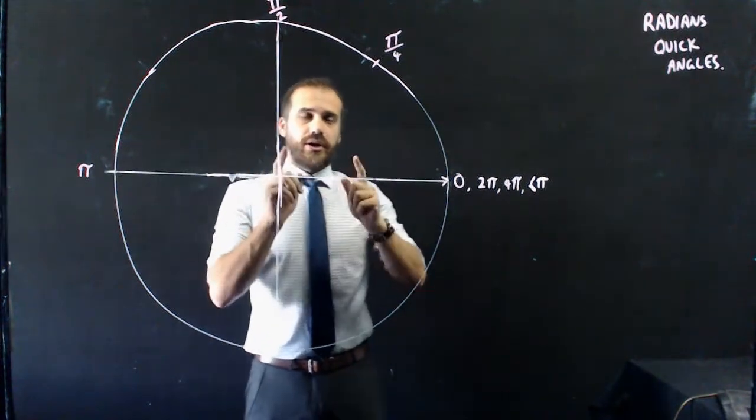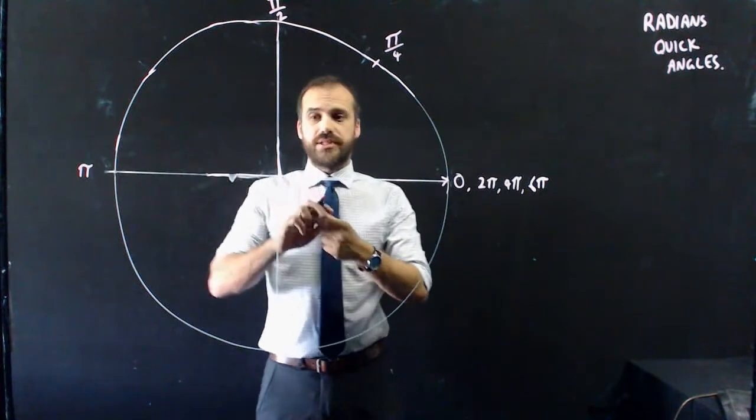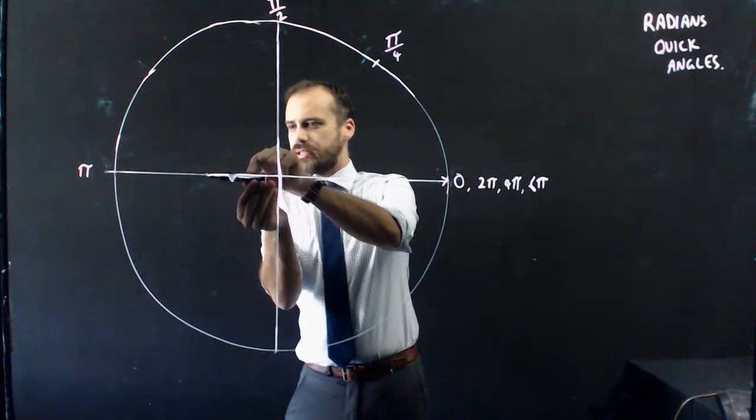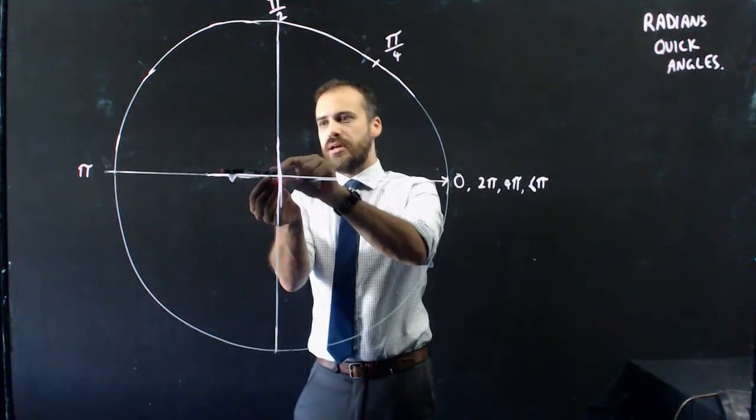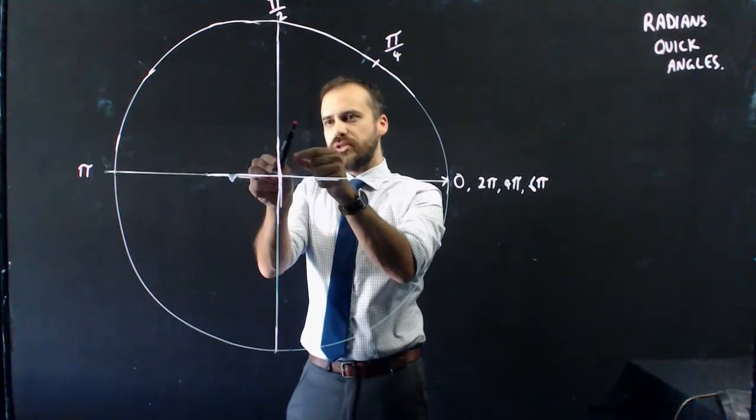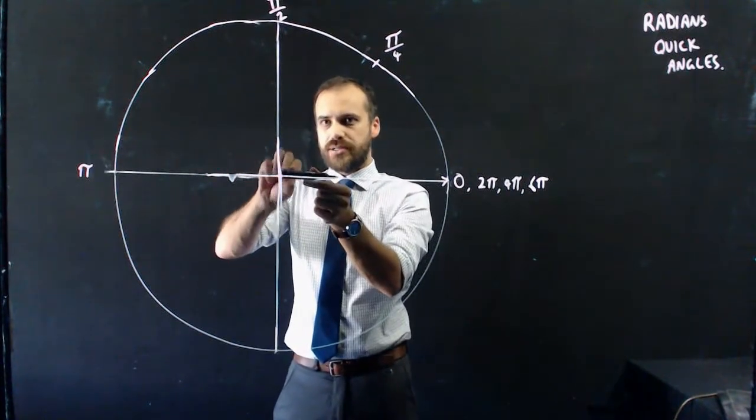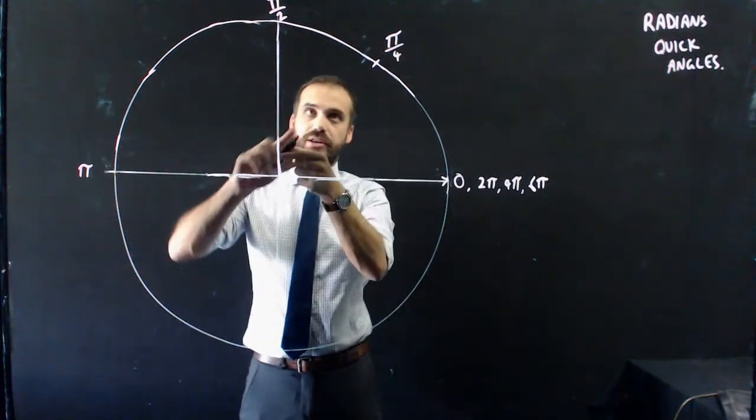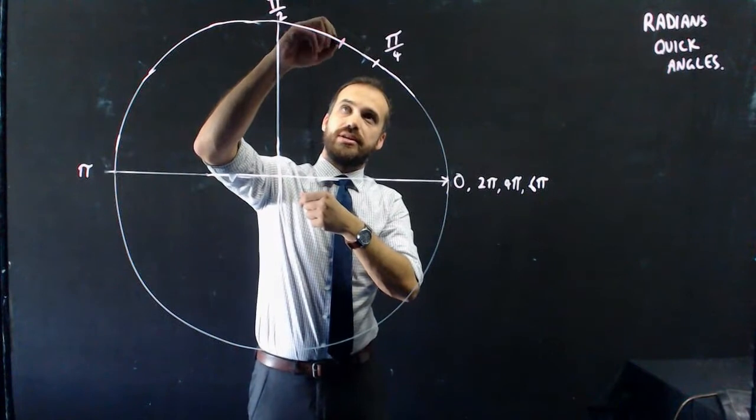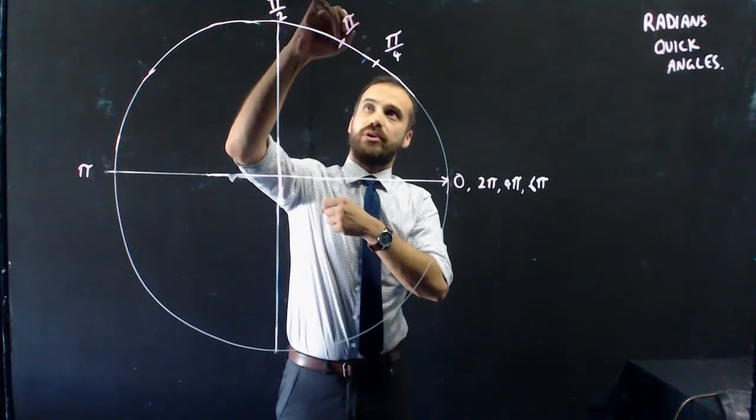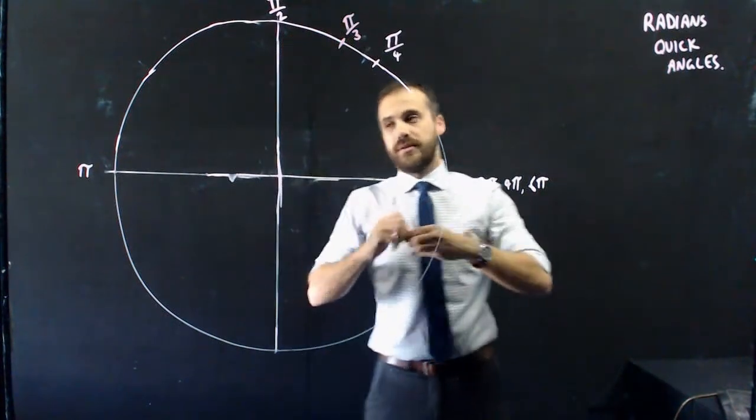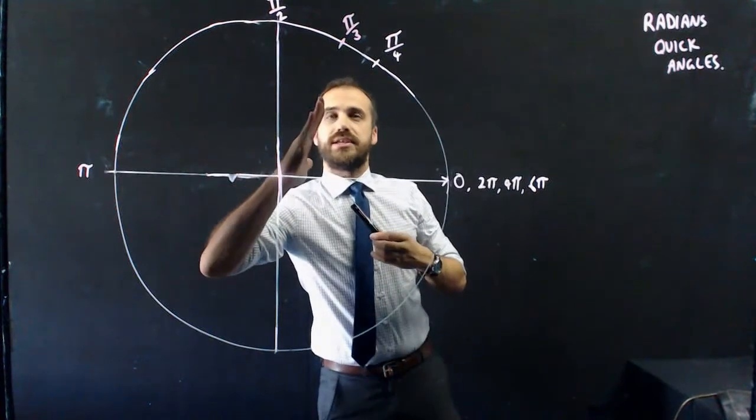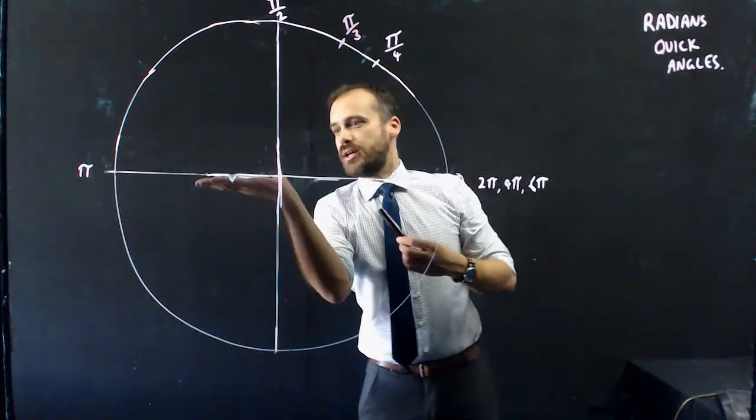How am I going to come up with 60 degrees? Well, that's 180, or π radians. If I split that into three equal parts, that's 60 degrees. So π divided by 3, here's 60 degrees. That's π/3. So 45 degrees, 60 degrees, 90 degrees, 180 degrees.